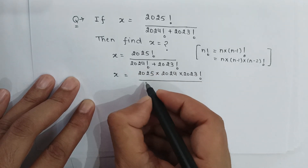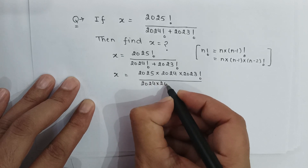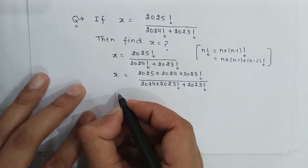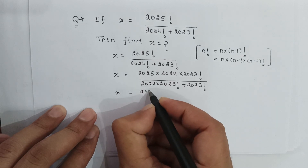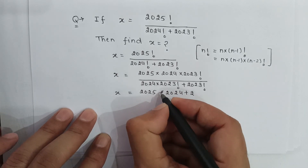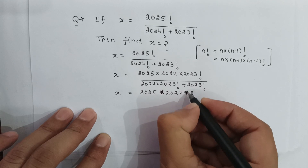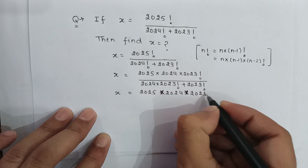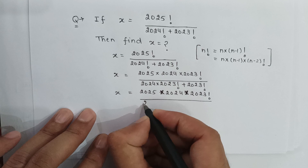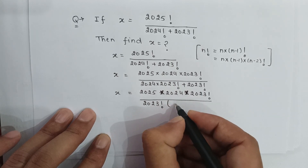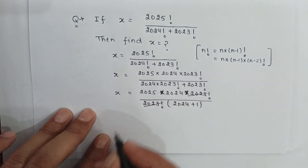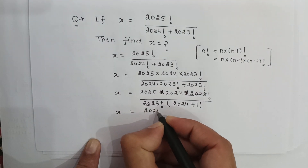And 2024 factorial can be written as 2024 multiplied by 2023 factorial, plus 2023 factorial. So x is equal to 2025 multiplied by 2024 multiplied by 2023 factorial, all over — if we take 2023 factorial common from the denominator, it becomes 2023 factorial multiplied by 2024 plus 1. The 2023 factorials cancel out.